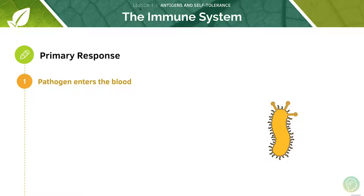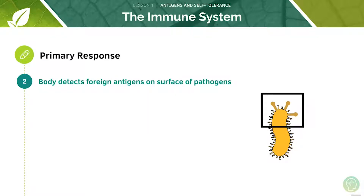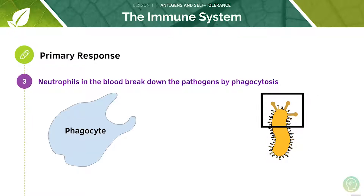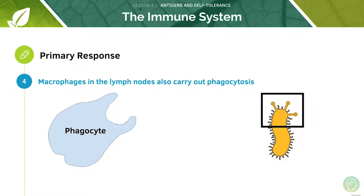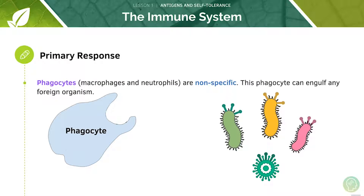Now let's look at the primary immune response. The first step is for the pathogen to enter the blood. After this the body can detect the foreign antigens on the surface of the pathogens, and the neutrophils can break down the pathogens by phagocytosis. The macrophages found at the lymph nodes can also carry out phagocytosis. Phagocytes are non-specific, which means they can engulf any kind of foreign organism no matter what it is.